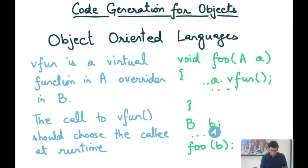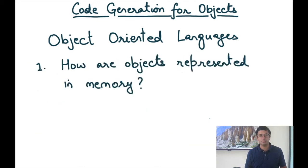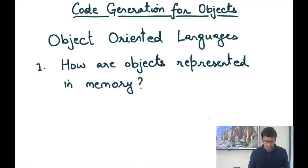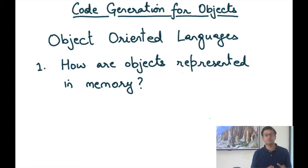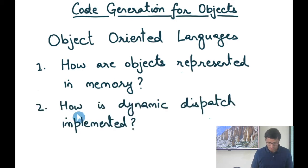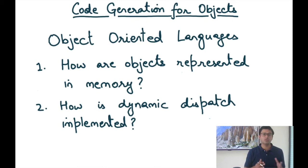Here's an example: if I declare an object of type B and call foo on it and then call VFUN, that VFUN should be B's VFUN and not A's VFUN. There are two primary questions when talking about code generation for object-oriented languages: first, how are objects represented in memory such that the inheritance principle is followed, and second, how is dynamic dispatch implemented so the compiler resolves VFUN to either A's or B's implementation at runtime.